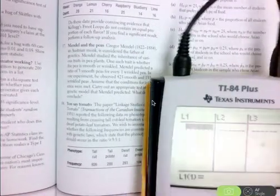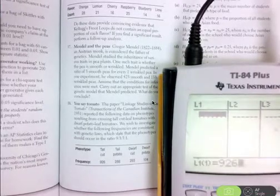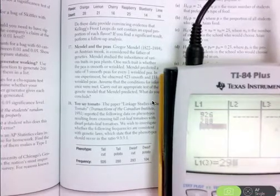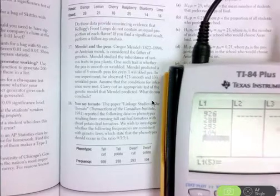Here we go. I will enter those in as my observed counts, the 926, the 288, the 293, and the 104. There are the observed counts.